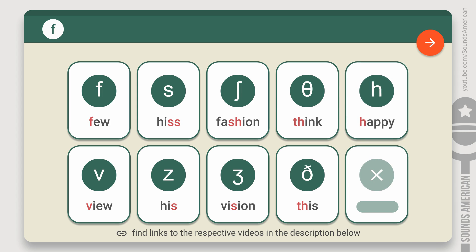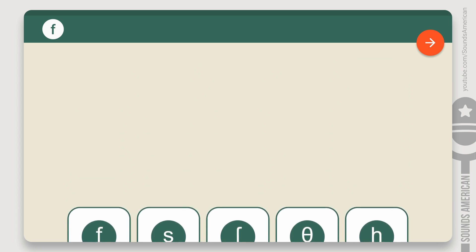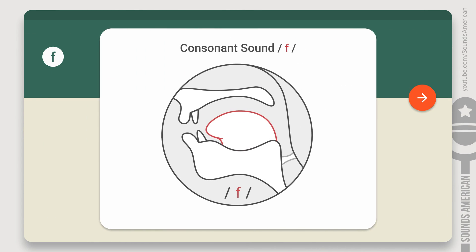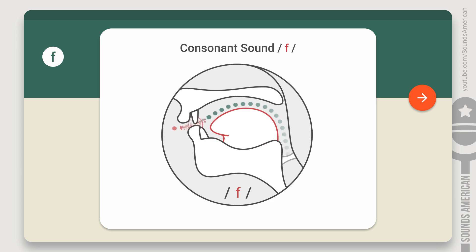So, why are they called the fricative consonants? All these sounds are made by partially blocking the air moving through your mouth, which creates an audible friction. Speaking about the F consonant, this sound is made by partially blocking the air with your lower lip and your upper teeth.